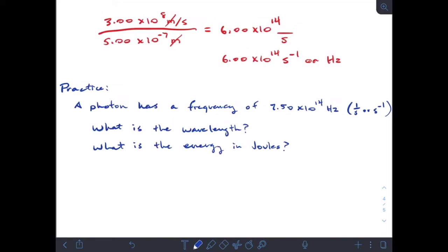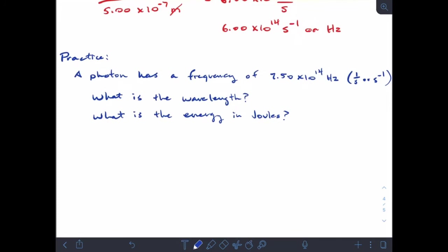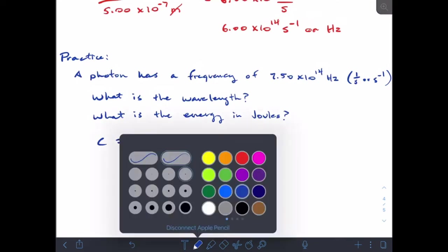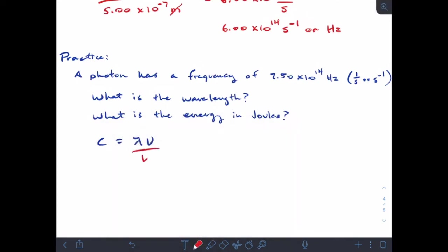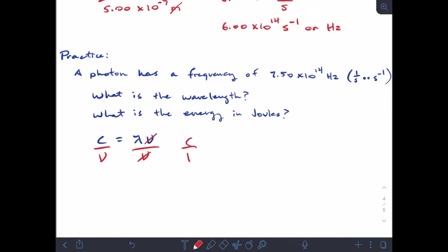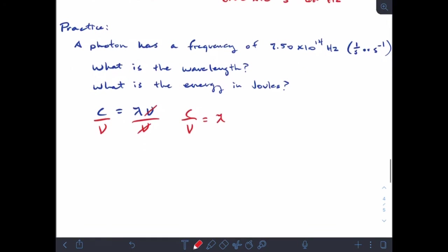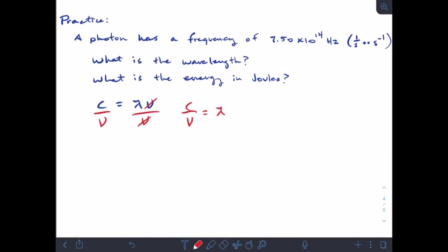Our first question we can answer pretty quickly with the same equation we just used: c equals λ times ν. This time I know what ν is, I want to find λ. If I get λ all by itself, I divide by ν on both sides, so c over ν equals λ.